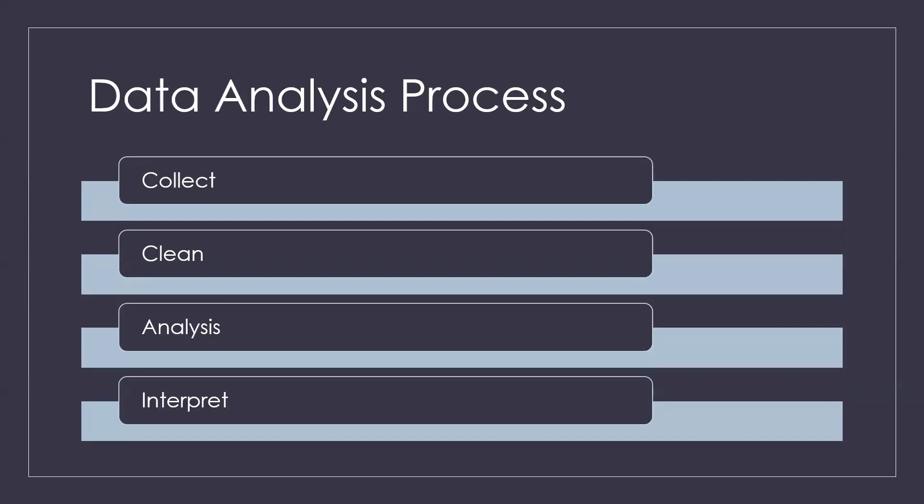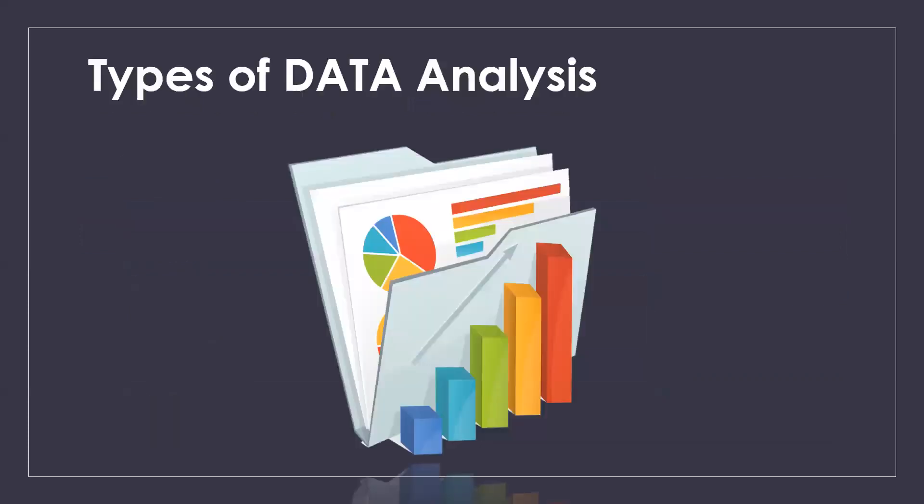After the analyzing stage, we go for interpretation — it determines whether the data taken for analysis has answered our question, what recommendations it provides, and what the merits, demerits, or limitations of the previous work are relative to our work. From this we can decide the conclusion in the data analysis process.